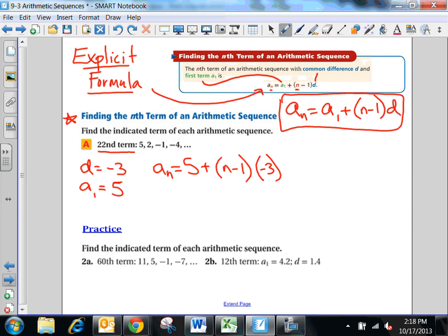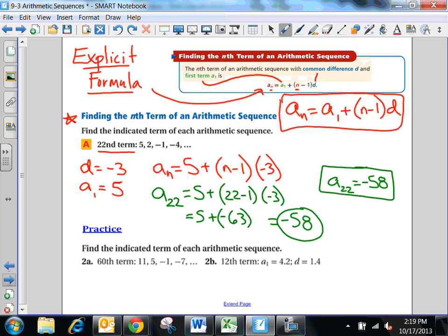Now to find the 22nd term, I'm going to do this. a, n, in this case, is 22. Now what this means is just that it's the 22nd term. And here, I'll do 5 plus 22 minus 1 times negative 3. And then I just work the right side out. So this would be 21 times negative 3. I would do 5 plus negative 63 here. And that would be equal to, sorry, negative 58. So negative 58 would be the 22nd term for this sequence. So we would say a sub 22 is negative 58. And what that means is that the 22nd term is negative 58.